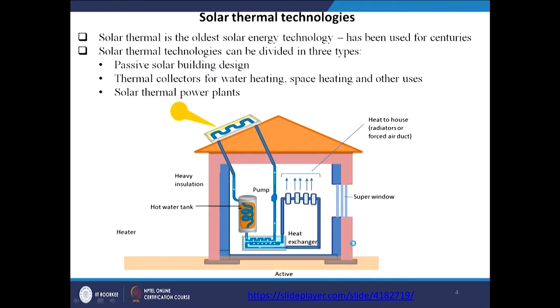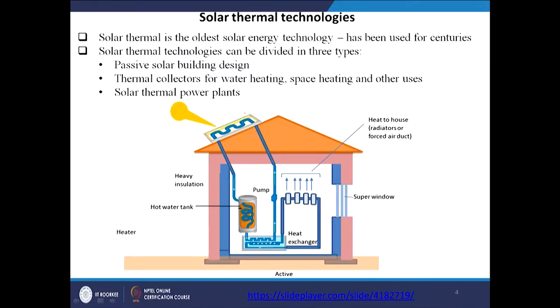Passive design of buildings helps us to get solar energy for heating applications — the building is designed in such a way that we are able to get some amount of energy automatically. But by using some active heating device, we can also collect more energy for these applications.